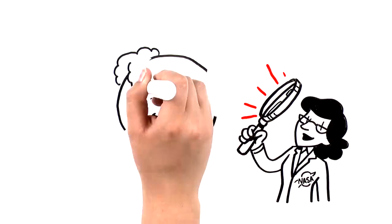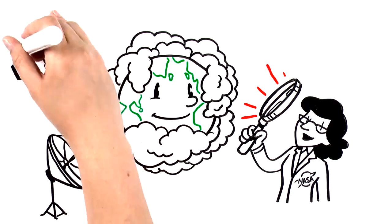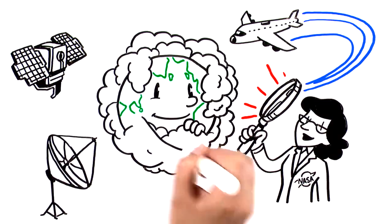So NASA studies clouds from all angles, to help scientists make their climate forecasts a lot less cloudy.